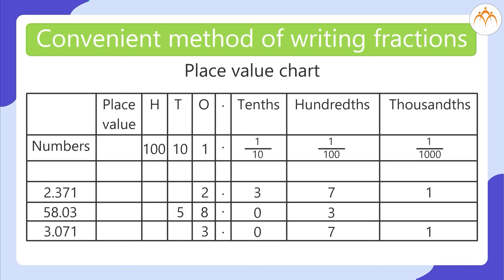Let us learn how to write numbers in a place value chart. Place values: 100, 10, 1, decimal point, tenths, hundredths, thousandths. For the number 2.371: 1's place is 2, decimal point, tenths is 3, hundredths is 7, thousandths is 1.